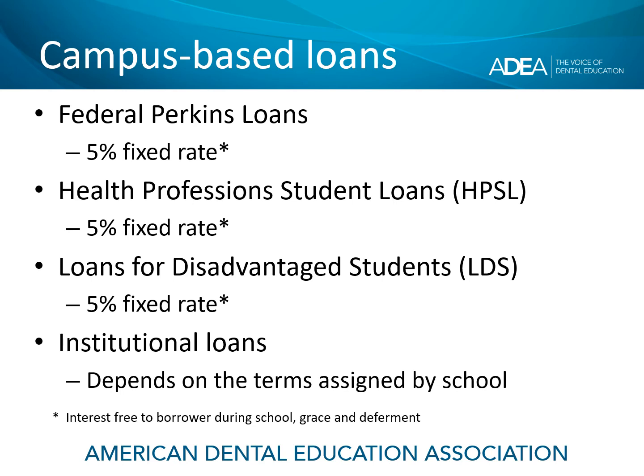Institutional loans — loans that came straight from your school from private funds — will depend on the terms assigned by the school. Most campus-based loans are at 5% fixed. If you have an institutional loan, you'll need to check with your school about the interest rate.